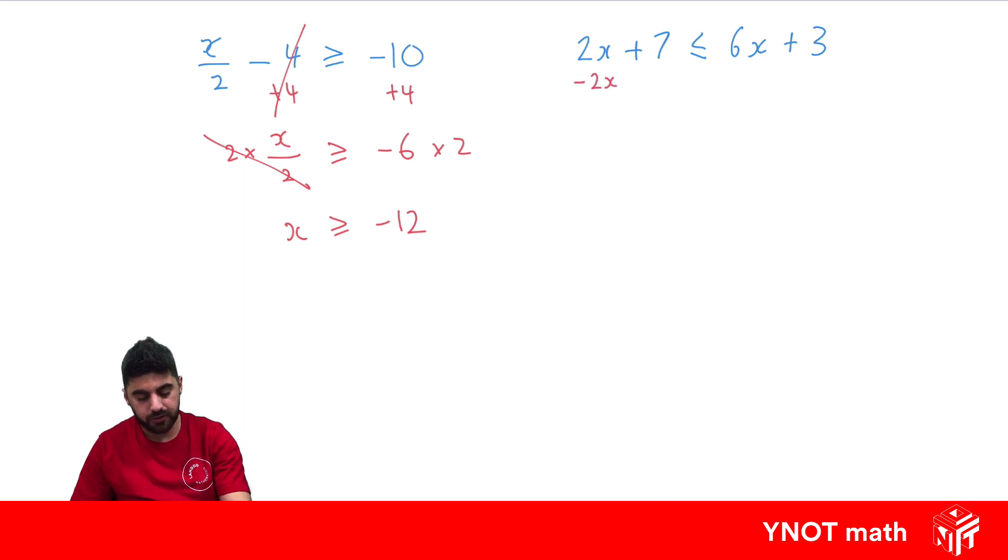So that's minus 2x to both sides. So that goes away. We're just left with 7. It's less than or equal to 6x minus 2x is 4x plus 3.